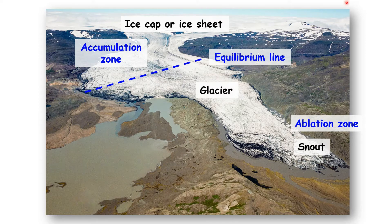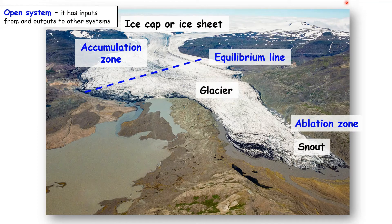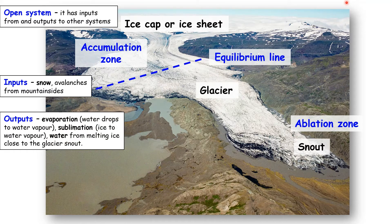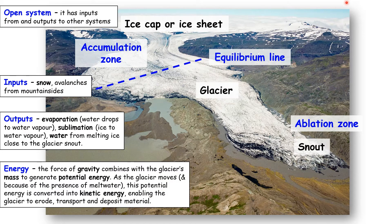Here's a simple diagram showing different parts of the glacier. Let's look at the glacier as a system — it's an open system, meaning it has inputs from and outputs to other systems. Main inputs will be snow and also snow and ice falling down from the mountain sides through avalanches. The main outputs from the glacier will be evaporation, sublimation — which is where ice turns directly to water vapour without the water stage in the middle — and water from melting ice close to the glacier snout. The force of gravity combines with the glacier's mass to generate potential energy, and as the glacier moves and because of meltwater, this potential energy is converted into kinetic energy, enabling the glacier to do the work of erosion, transportation, and deposition.